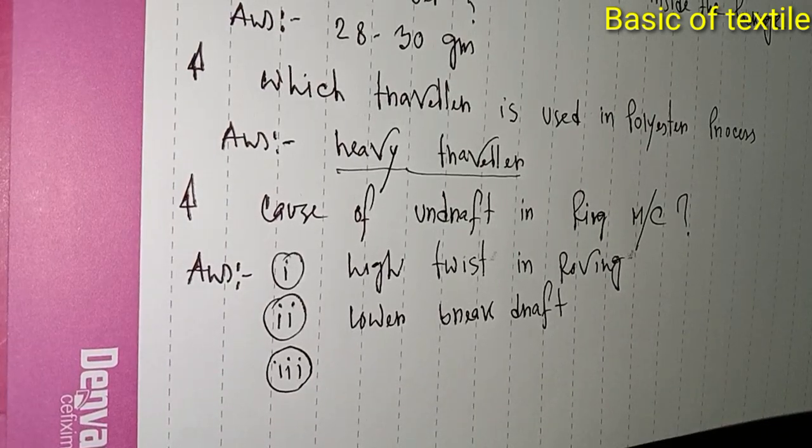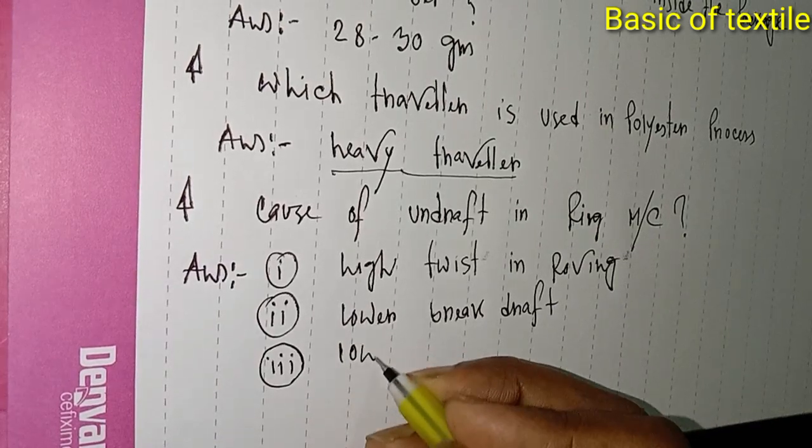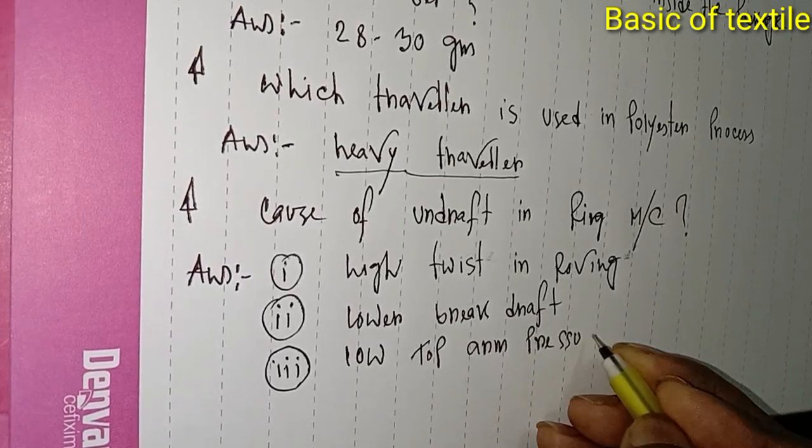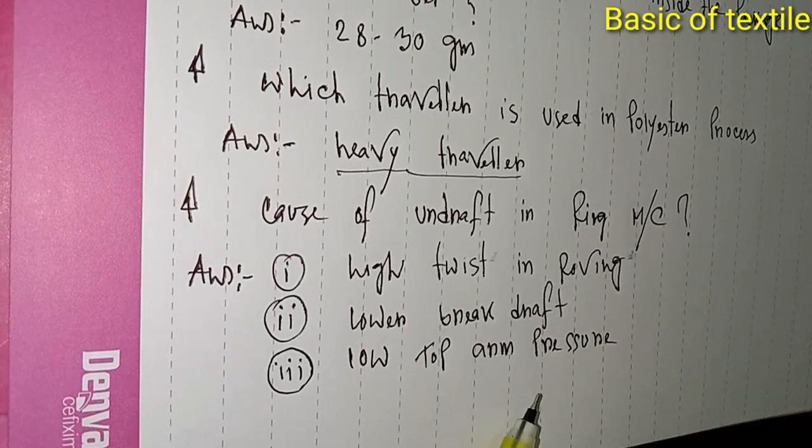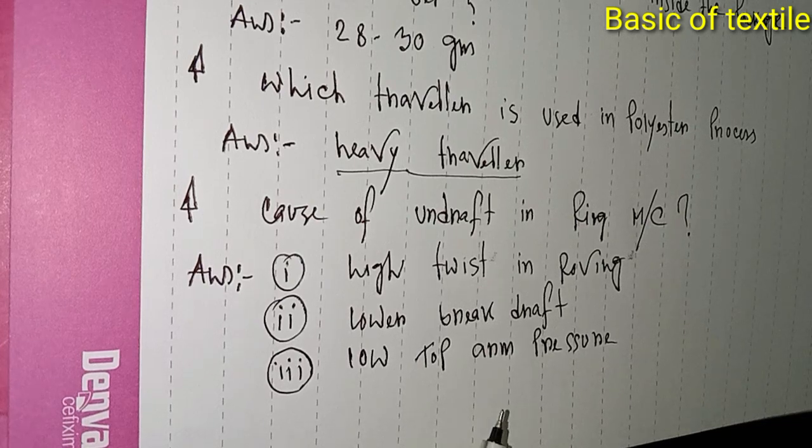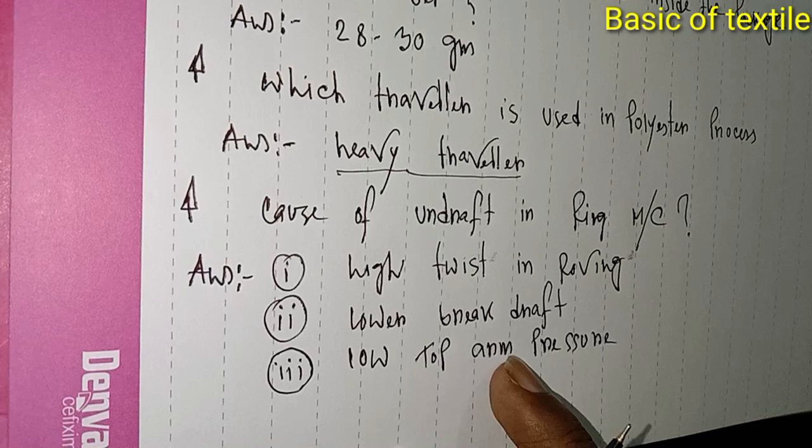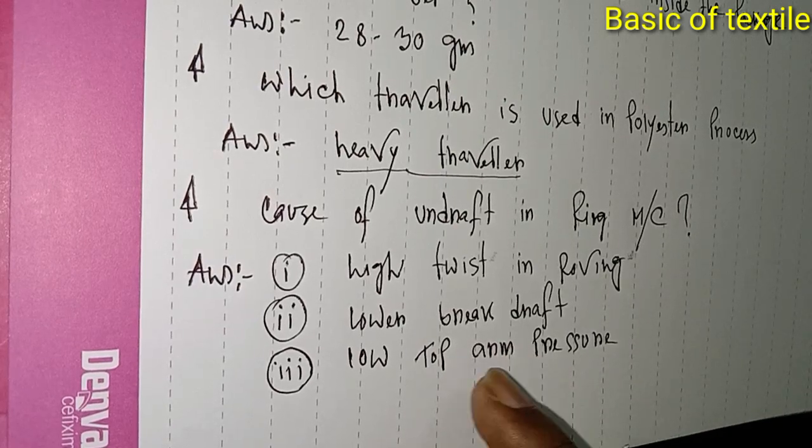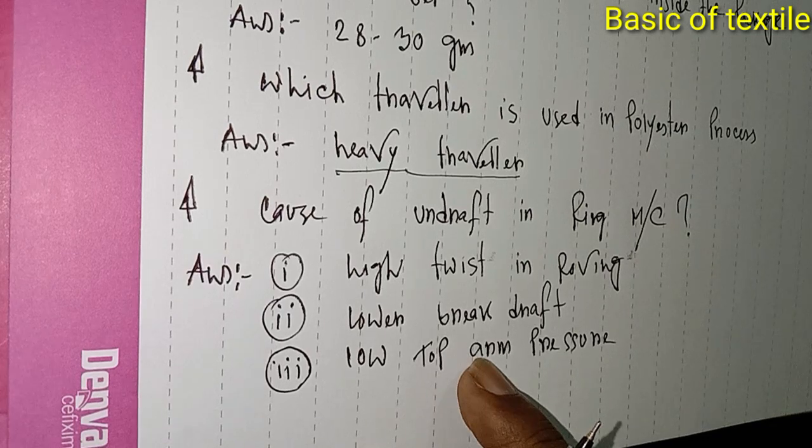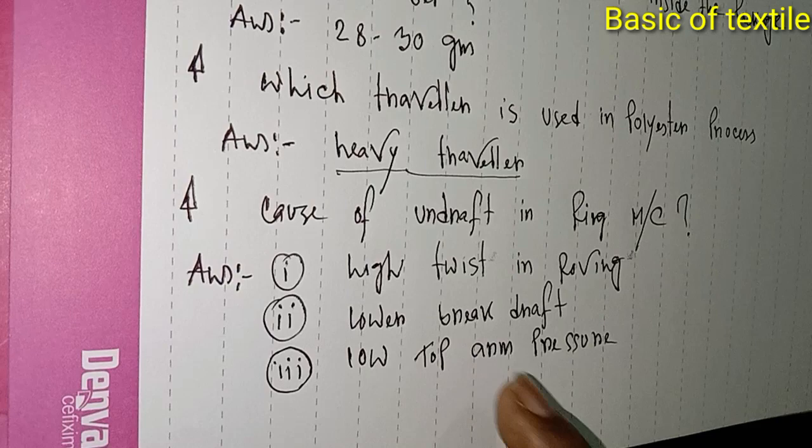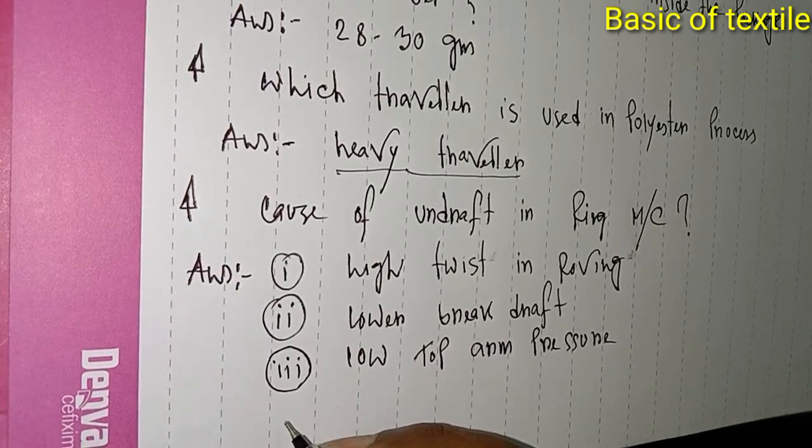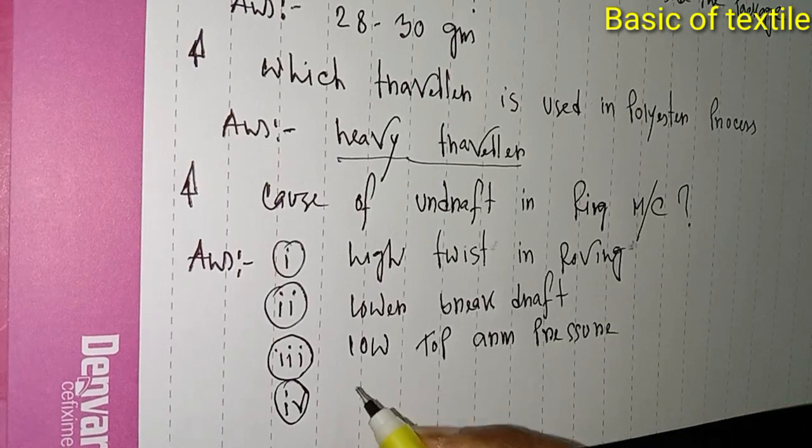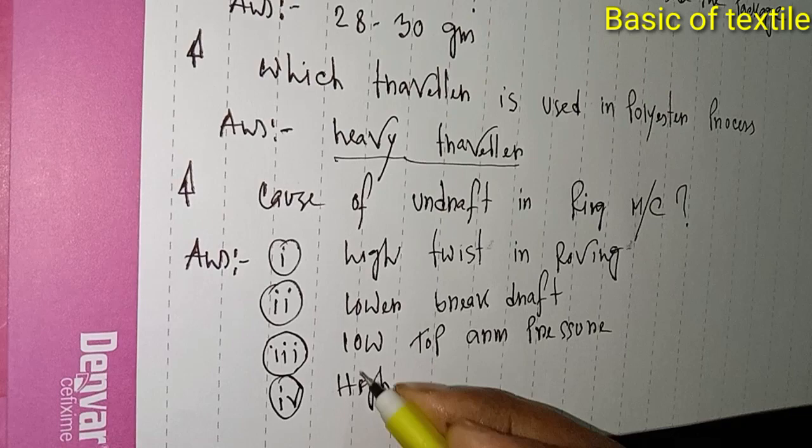Number three: low drop arm pressure. When the arm pressure is low and not working properly, the pressure drops below the standard. This insufficient pressure contributes to undraft issues in the ring machine.